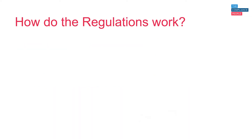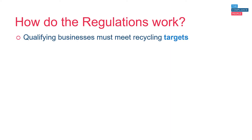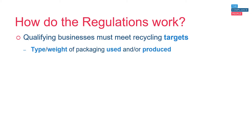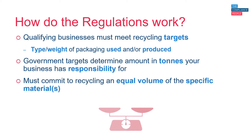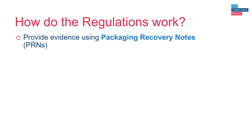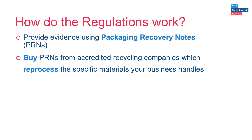So how do the packaging waste regulations work? Any business that qualifies under the regulations must meet recycling targets, and these are annual figures relating to the type and weight of packaging used and/or produced, and the targets set are defined by government. The set of targets determines the amount in tonnes that your business has responsibility for. Businesses must commit to recycling an equal volume of the specific material or materials, and they must provide evidence of this recycling in the form of Packaging Recovery Notes, or PRNs. You can buy PRNs from accredited recycling companies which reprocess the specific materials your business handles.